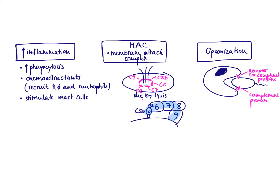Effector mechanism number two is the formation of the membrane attack complex, which is a very powerful tool that helps clear an infection. One complement protein settles on the bacterial surface, and then it recruits another, and another, and another complement protein. Those complement proteins together form a pore — they make a hole in the bacteria so that extracellular fluid can get in, and the bacteria dies by lysis.